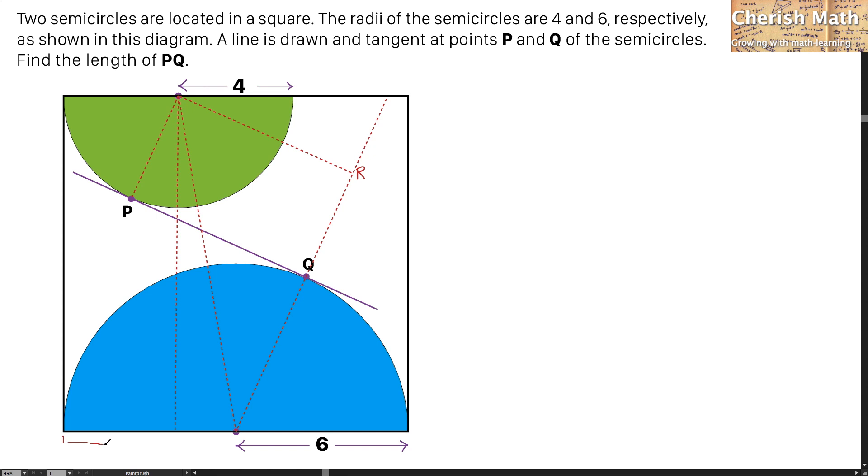For the length of this part, that is exactly 4 units, same with the length of this radius of the green semicircle. And for the part that I'm highlighting here, that would be by using 6 units minus the 4 units, and that is exactly 2 units.